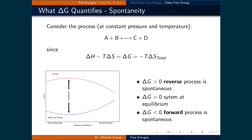If the change in Gibbs free energy is equal to zero, then the system is at equilibrium. And finally, if the change in Gibbs free energy is greater than zero, then the reverse process is spontaneous.